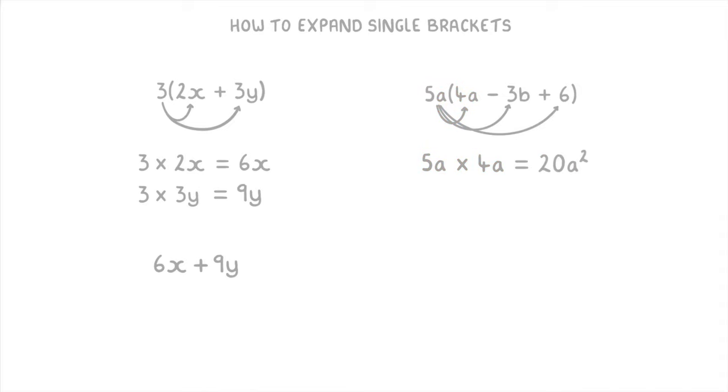Then 5a times minus 3b, which is minus 15ab, and finally 5a times 6, which is 30a. So in total you'd have 20a squared minus 15ab plus 30a as your overall answer.